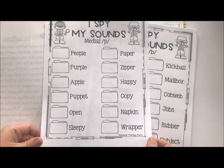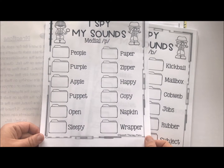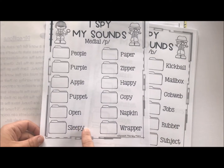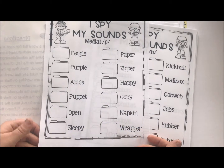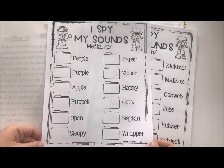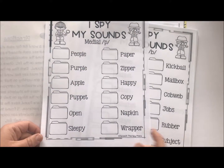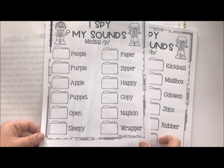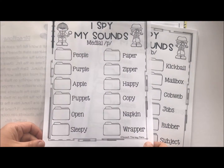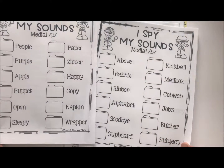Now, some of these aren't just nouns. Some of them are adjectives or verbs, and you can have them demonstrate it. So 'sleepy' — obviously you can't really find sleepy, or maybe you can find somebody who is sleepy, or they can show you what sleepy looks like. Or finding something that's actually open, or they can open something for you. So there's a variety of different things.